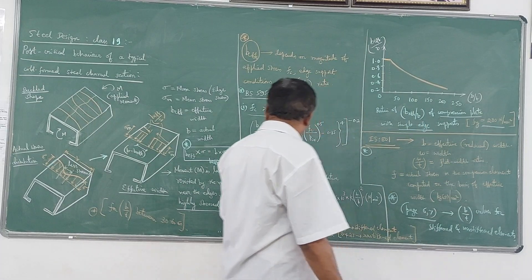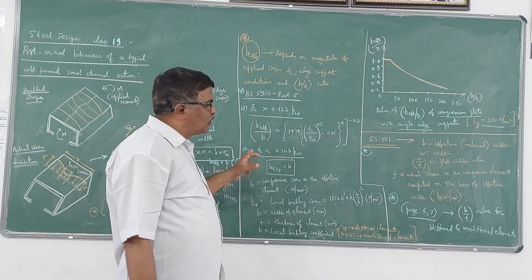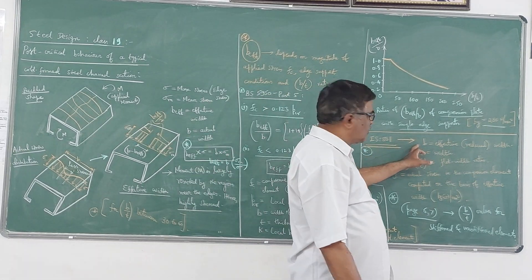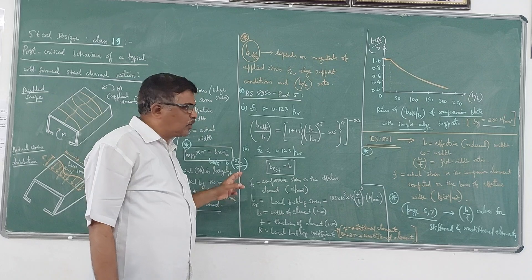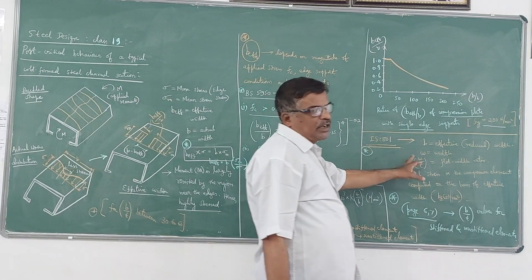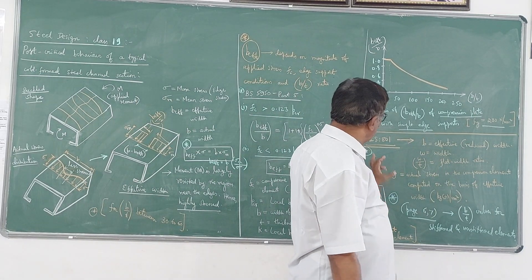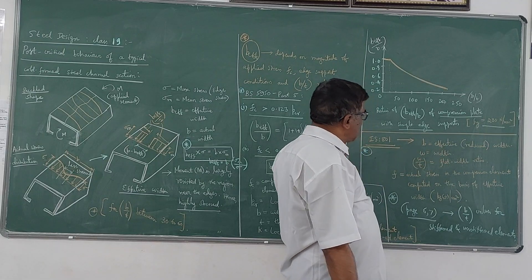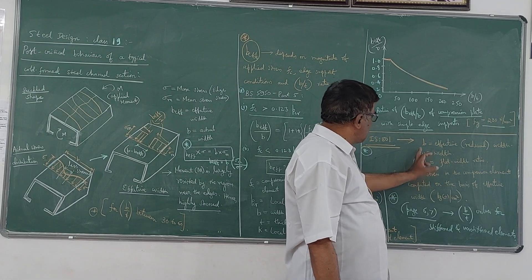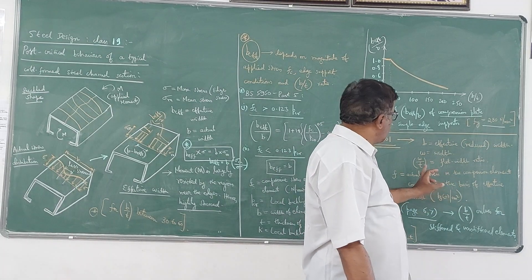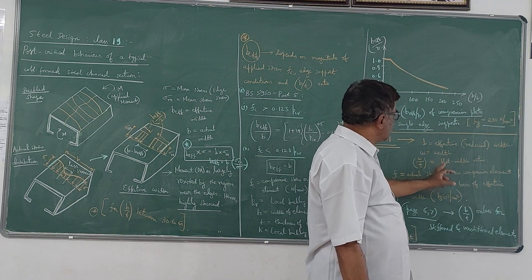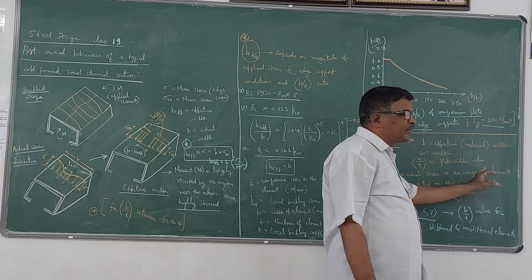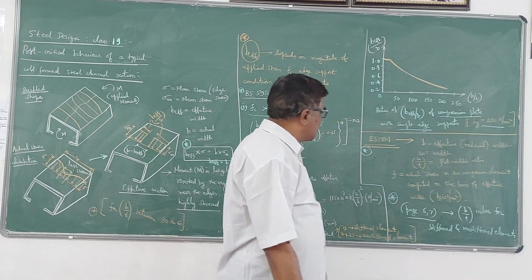So here whatever B_effective is there in European code, it refers to B in Indian code. And whatever B refers to in the European code, it refers to W in the Indian code. So B_effective is nothing but B here. B is nothing but W here. And this W by T ratio is nothing but B by T ratio. So that B by T ratio is called as the flat width ratio, flat width ratio in IS code.